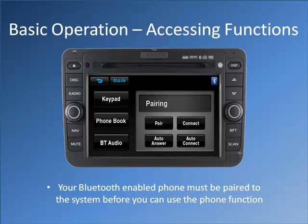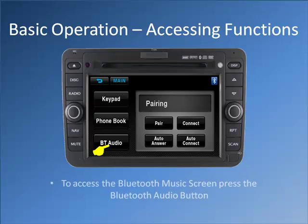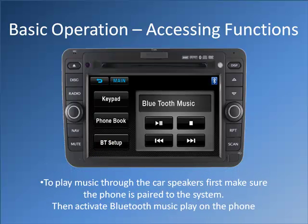Your Bluetooth-enabled phone must be paired to the system before you can use the phone function. To access the Bluetooth music screen, press the Bluetooth audio button. To play music through the car speakers, first make sure the phone is paired to the system, then activate Bluetooth music play on the phone.